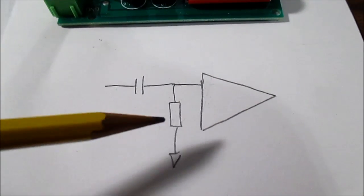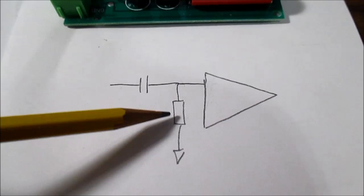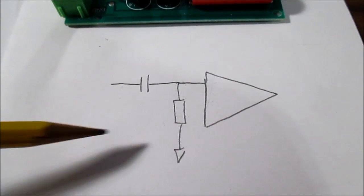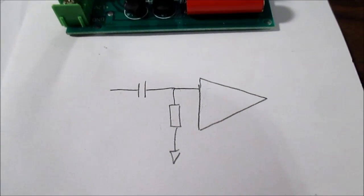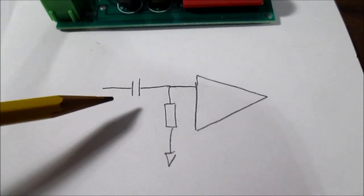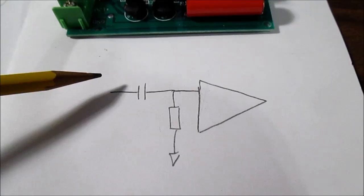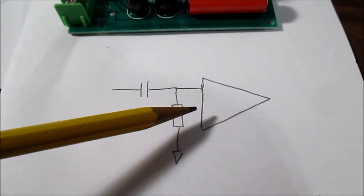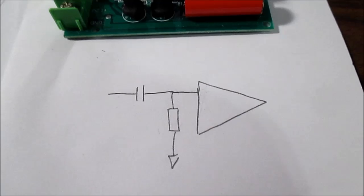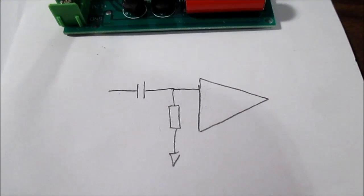You want to select a potentiometer that is half of that or less in resistive value. The reason being is if you don't follow that, you have a voltage divider effect with the potentiometer and the input impedance that causes the volume control action not to work properly.